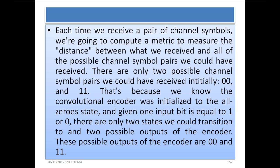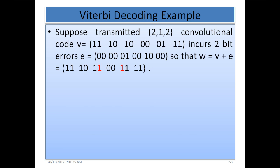That is because we know the convolutional encoder was initialized to the all-zero state, and given one input bit equal to 1 or 0, there are only two states it could transition to and two possible outputs of the encoder: 00 and 11. Now suppose the transmitted (2,1,2) convolutional codeword V equals 11 10 10 00 01 11.